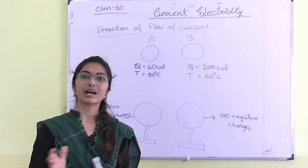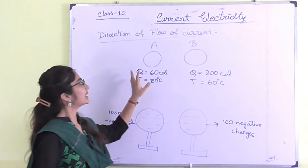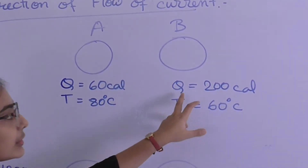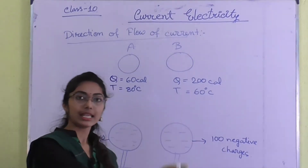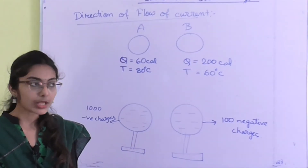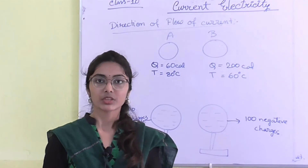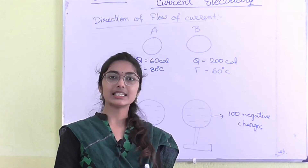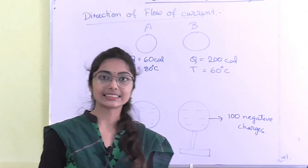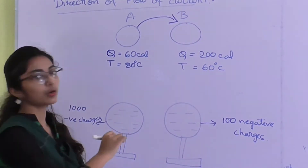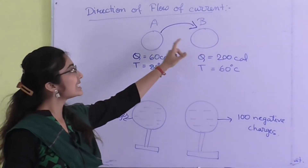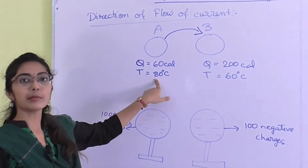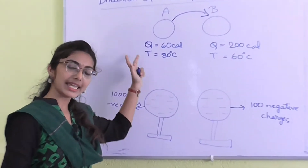Now we will know the direction of flow of current. Suppose there are two balls A and B. Ball A contains 60 calories of heat energy at 80°C, and ball B contains 200 calories at 60°C. The direction of heat flow depends on temperature, not on the amount of heat. Since A has higher temperature, heat passes from A to B. The direction of flow of energy is from A to B — it only depends on the temperature.